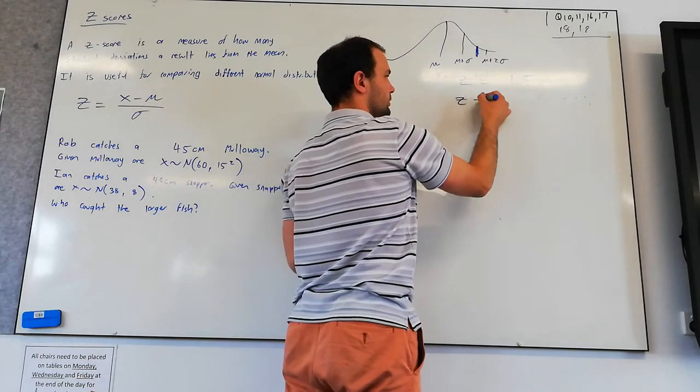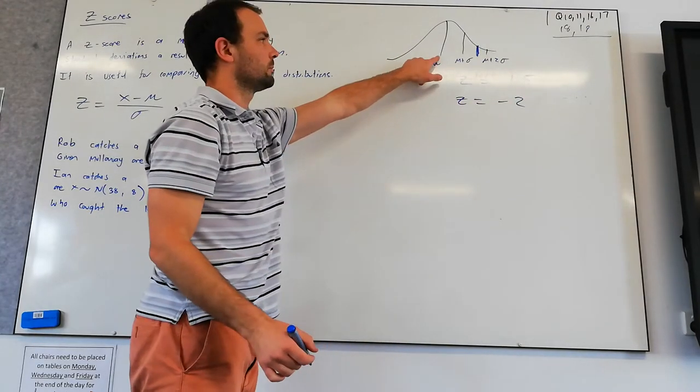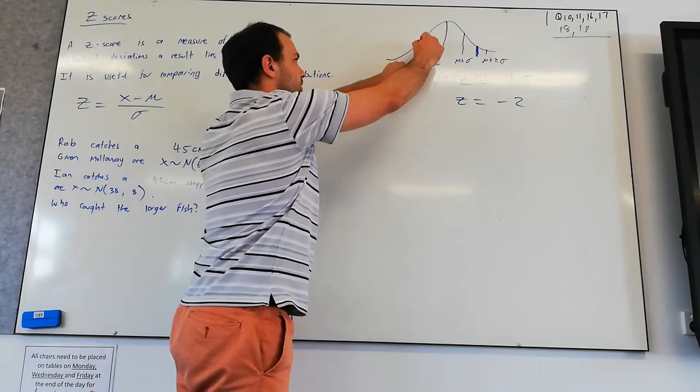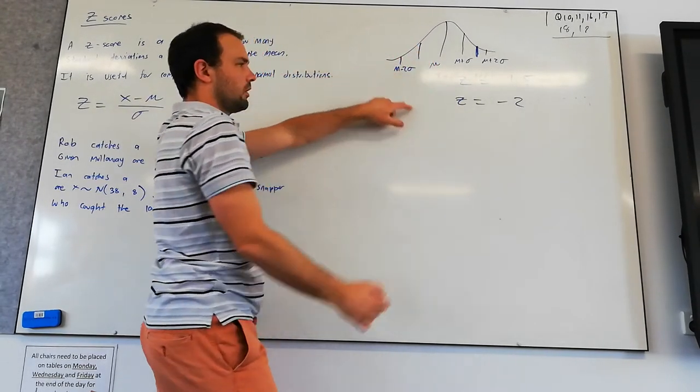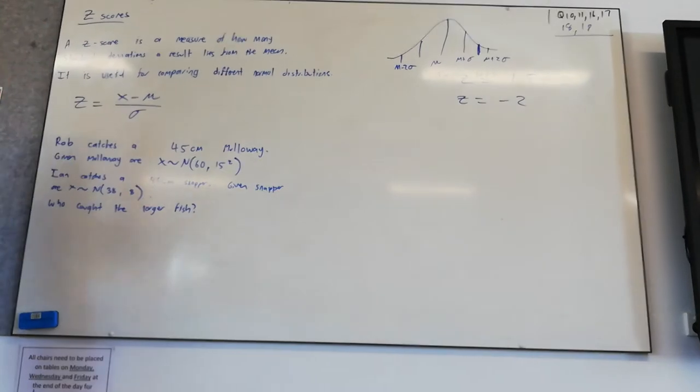If we had a z-score of minus two, that means your result would be two standard deviations below the mean. So the z-score is just how far your result is from the mean.